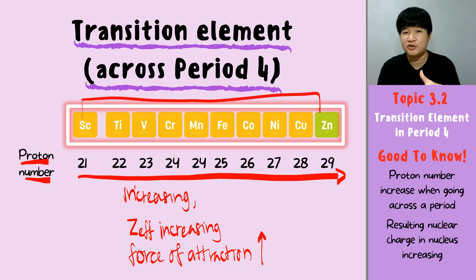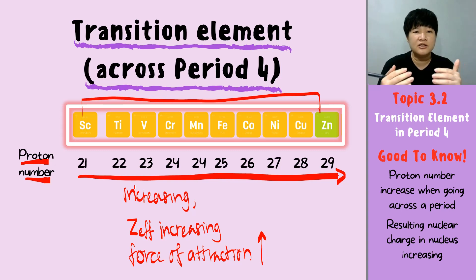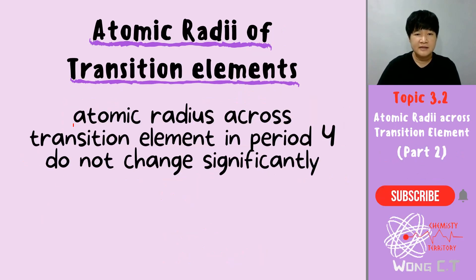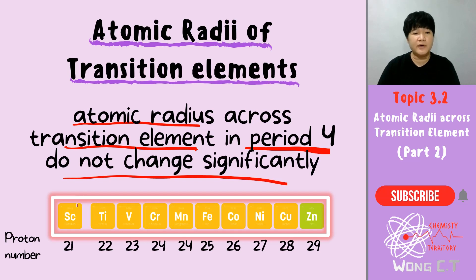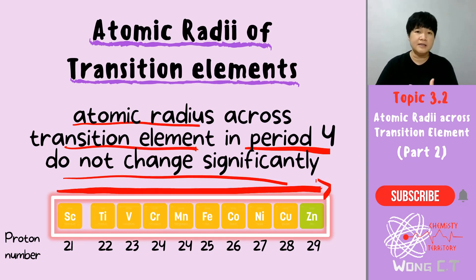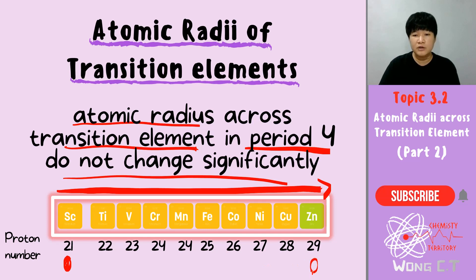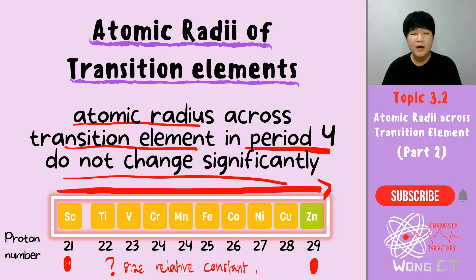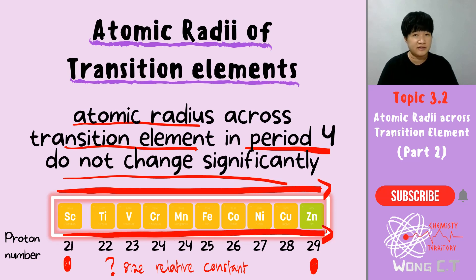I use the words 'by right should get smaller,' but in this case the size is actually not getting significantly smaller. The atomic radius of your transition elements in period 4 will not change significantly. There will be changes when moving from scandium all the way to zinc, but the changes are too small and very insignificant. That's why we assume there is almost no change in atomic radius from scandium to zinc — the size will be relatively constant. The question in your mind should be: why is the size relatively constant? Why is the size not changing much even though the proton number actually increases?